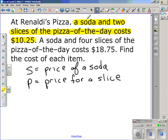That gives us a relationship between one soda, two slices of pizza, and the total cost. So taking this information here, S being the price of a soda, plus two pieces of pizza times the price for one piece, is going to be equal to $10.25.